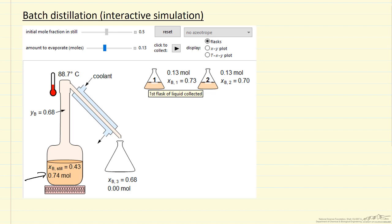So the first flask collected, collected in this case 0.13 moles, and the mole fraction of component one is 0.73. The next one collected, the mole fraction has decreased because we've evaporated the more volatile component. And so this is just to demonstrate how the temperature changes as we carry out batch distillation.